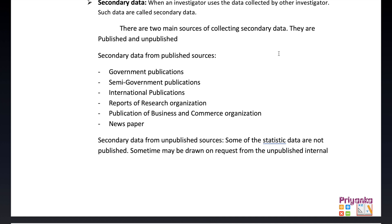When an investigator uses data collected by another investigator, such data are called secondary data. In primary data, information is collected for the very first time, but in secondary data, we are using someone else's investigation. There are two main sources of collecting secondary data: published sources and unpublished sources.